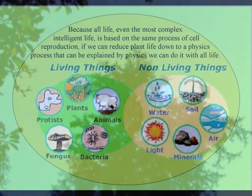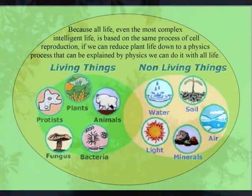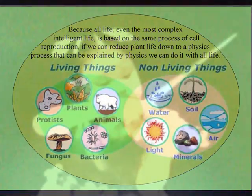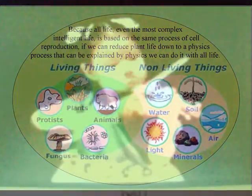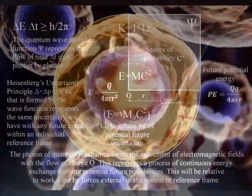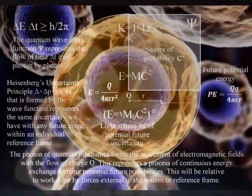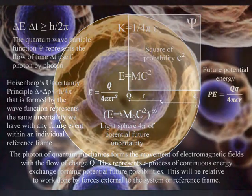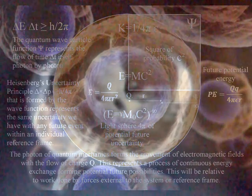The important thing is, if we can reduce plant life down to a physical process that can be explained by physics, we can do it with all life. This is because even the most complex intelligent life is based on the same process of cell reproduction.